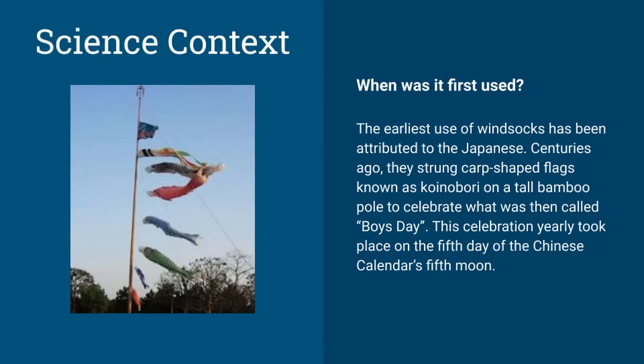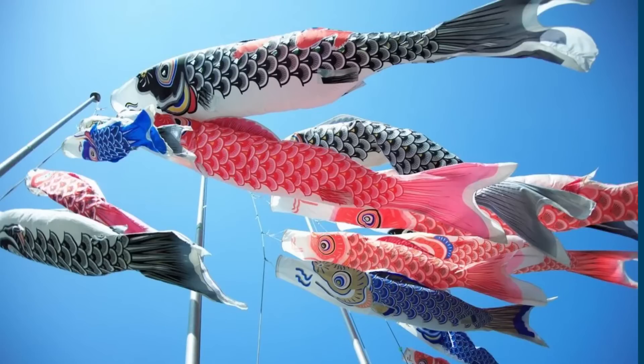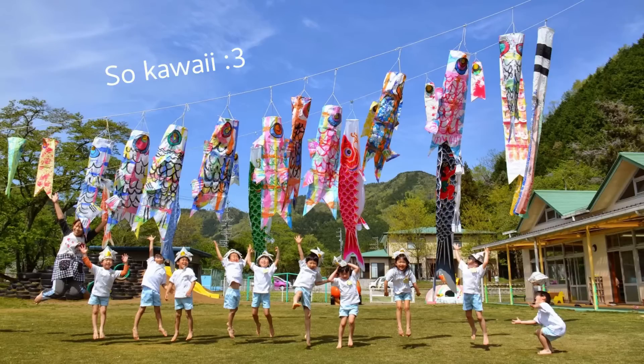The earliest use of windsocks has been attributed to the Japanese. Centuries ago they strung carp-shaped flags known as koinoburi on a tall bamboo pole to celebrate what was then called Boys Day. This celebration yearly took place on the fifth day of the Chinese calendar's fifth moon.